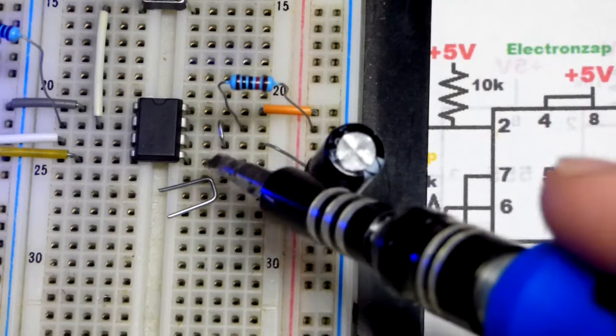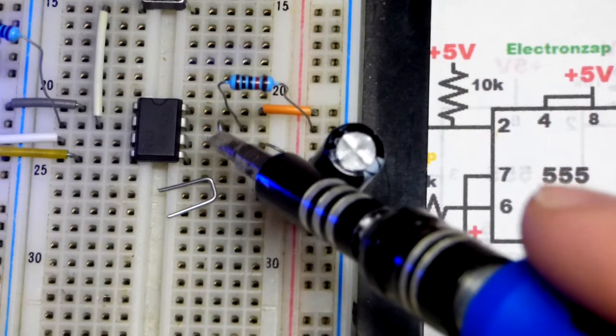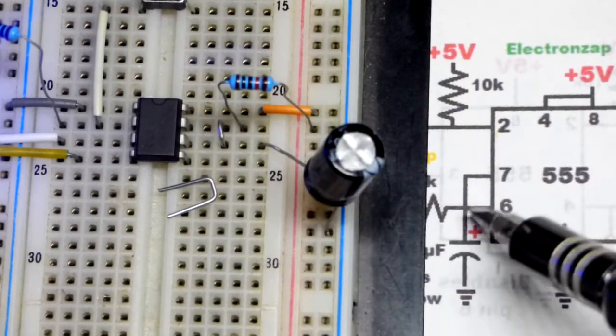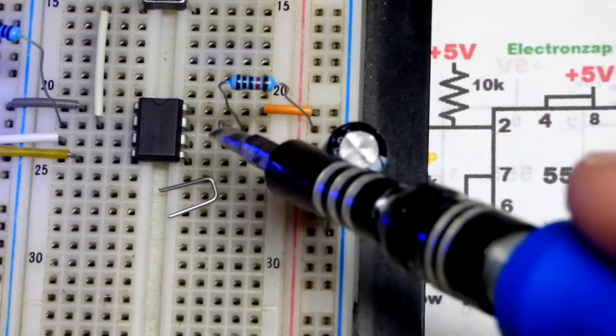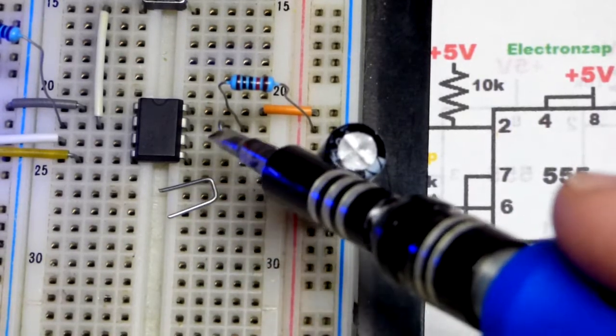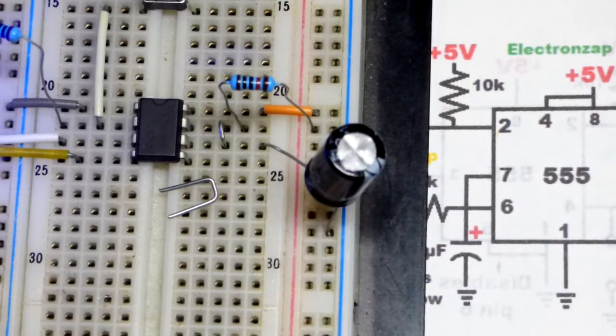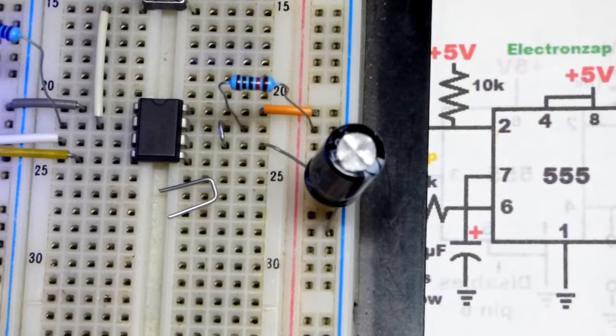Everything else was probably pretty easy to see except for this little jumper there. Pin six and pin seven are tied together. I just have one of these little metal jumpers that I put in there. I want to make sure I pointed that out in case you missed it. That's it for this video, thanks for watching.